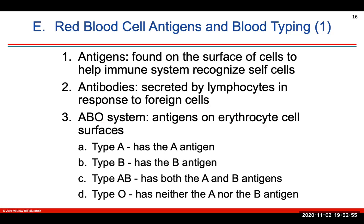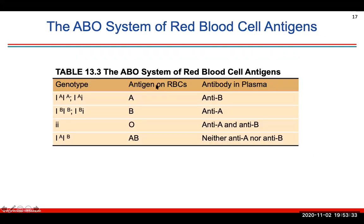Blood type is named for the antigen found on the surface of your red blood cells, and your plasma has antibodies that respond to foreign non-self antigens. In the ABO system: type A blood has the A antigen, type B has the B antigen, type AB has both A and B antigens, and type O has neither. Here you can see the antigen on the red blood cell for type A, B, O, and AB blood.